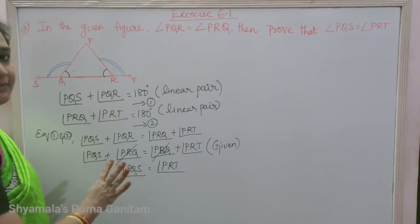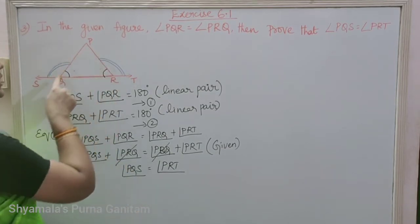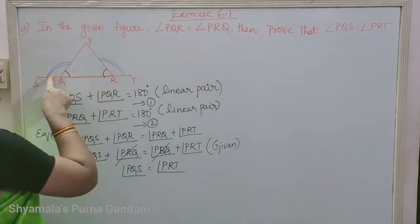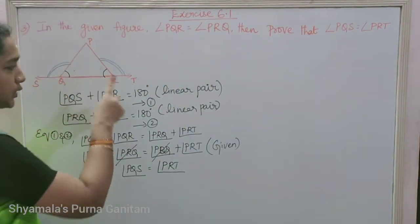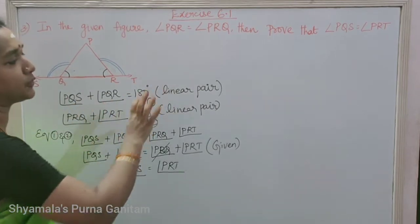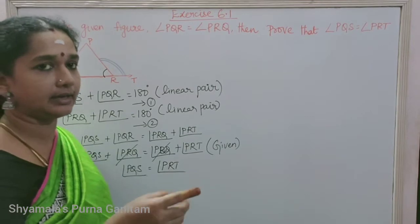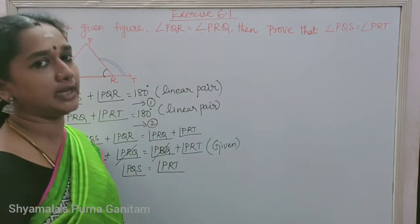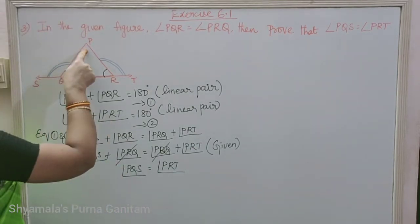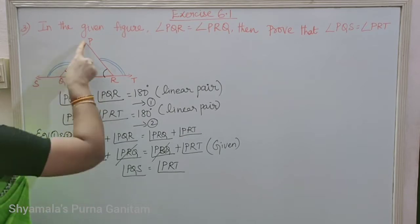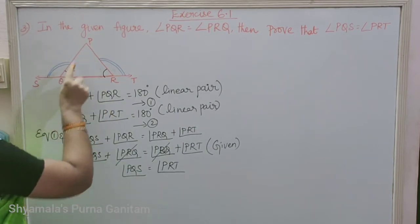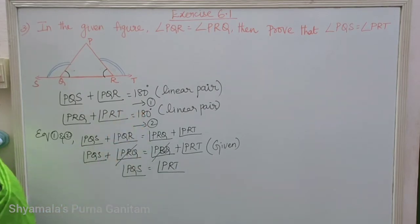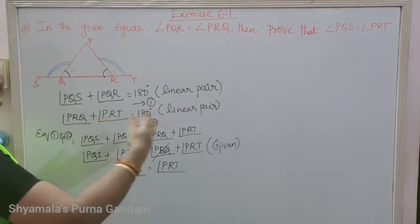Recap of Problem 3: Given PQR equals PRQ, prove PQS equals PRT. Using linear pair on each side — PQS + PQR = 180° and PRQ + PRT = 180°. Since the RHS values are equal, I equate the LHS. Then substituting PQR with PRQ (as given), the PRQ terms cancel, leaving PQS equals PRT.